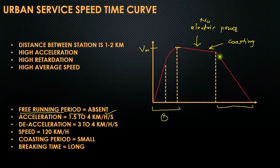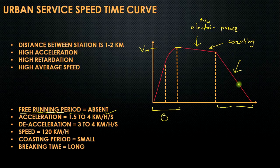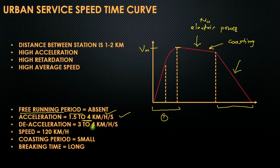In the braking period, the train has almost reached its destination, so mechanical or electrical brakes are applied. To keep it more efficient, this coasting period is kept longer so that the momentum energy can be utilized in the best way. Therefore, the braking period is also relatively larger.